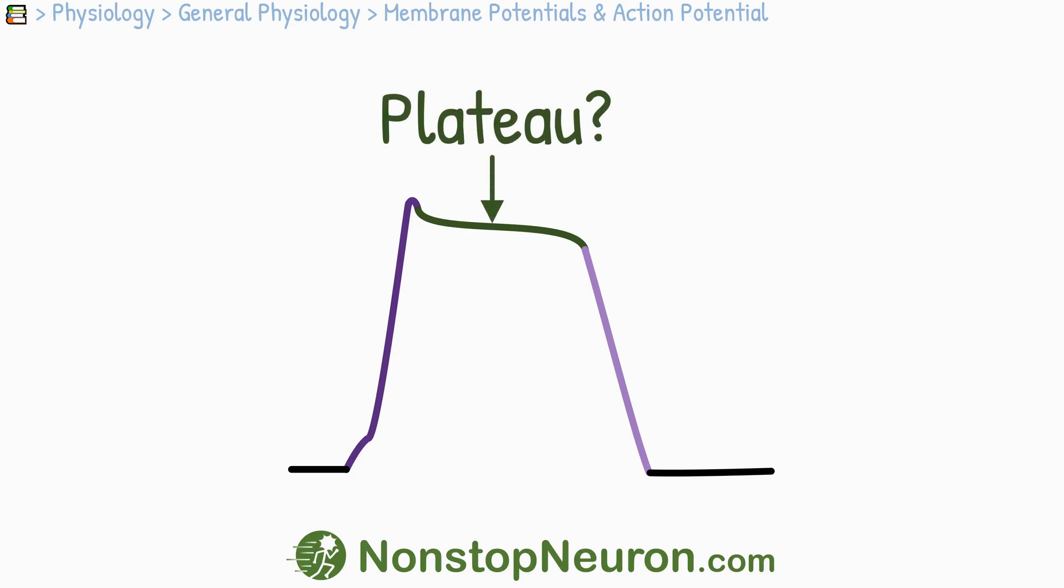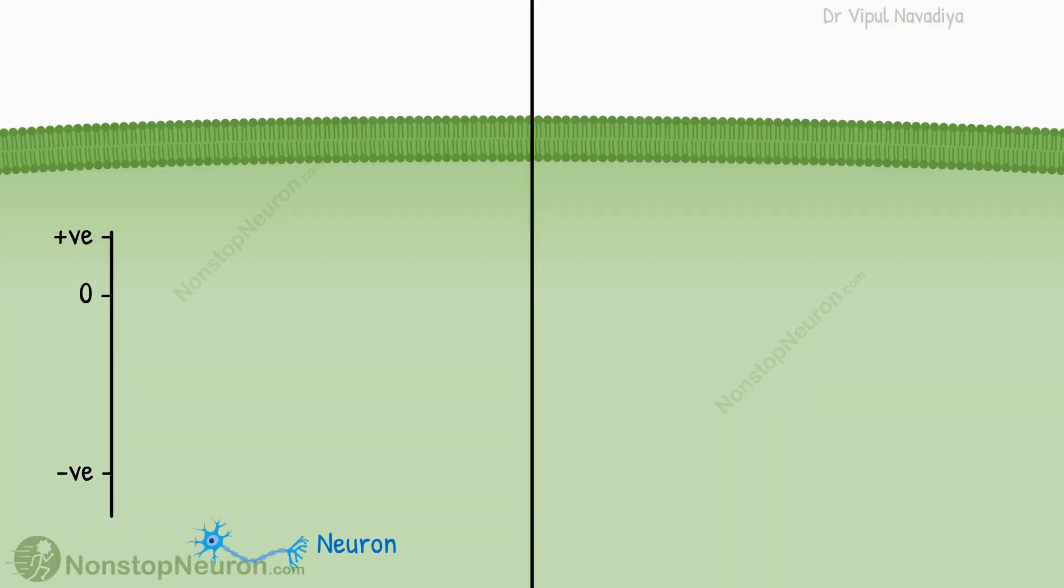In this video, we will see how a plateau is produced in some action potential. First, let's quickly see a typical action potential in a neuron.